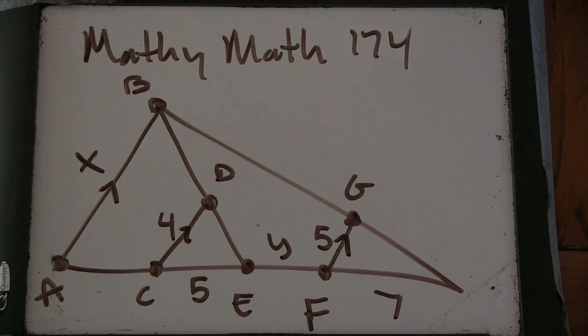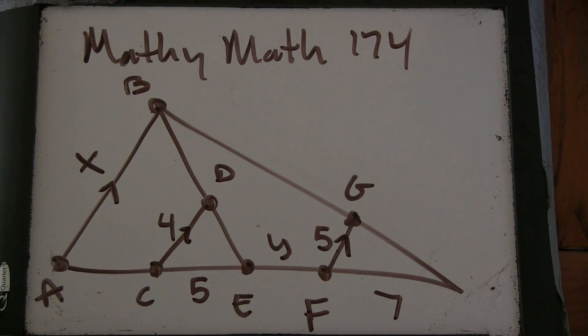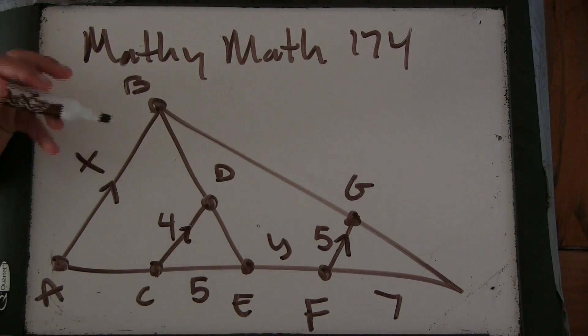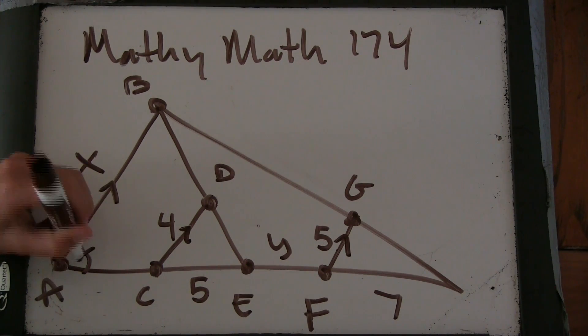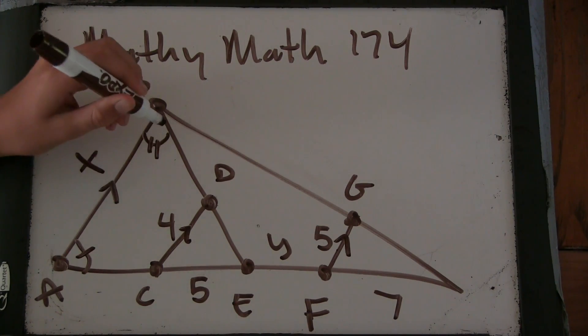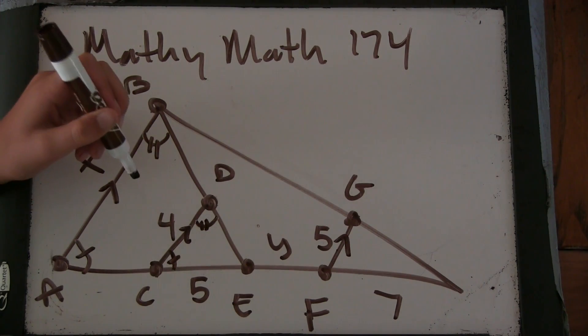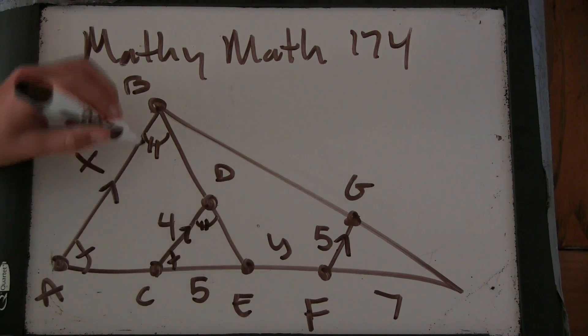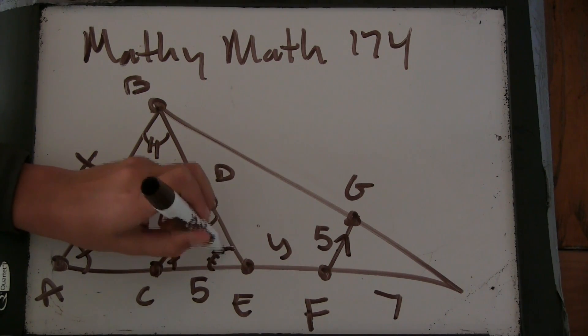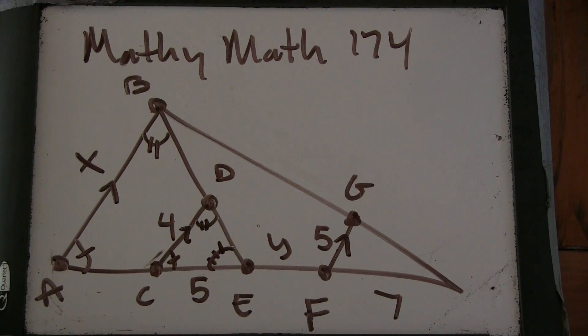Well, this chapter is about similar triangles, so we're going to find some triangles that are similar. So now this angle and this angle are the same like that, because they're parallel lines. And these two triangles share that angle.